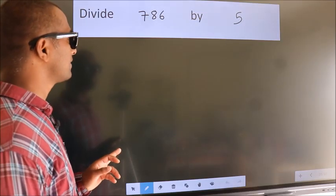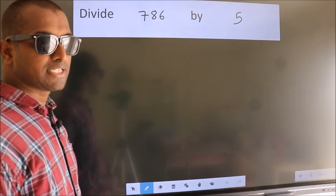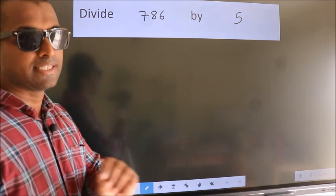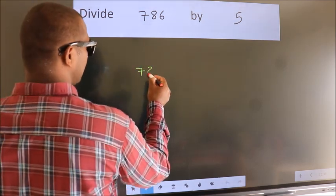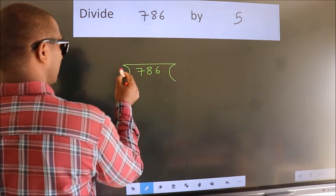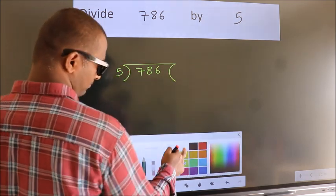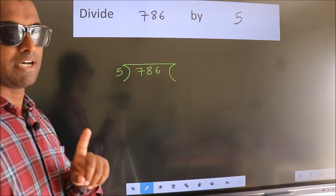Divide 786 by 5. To do this division, we should frame it in this way. 786 here, 5 here. This is your step 1.